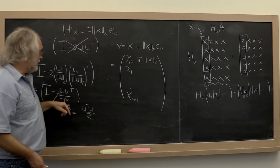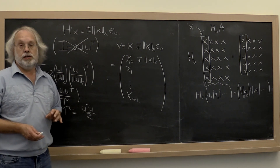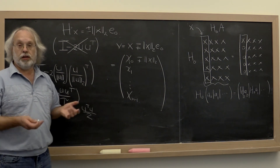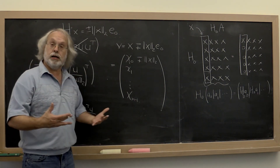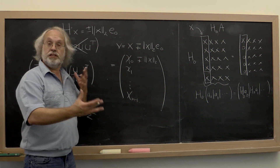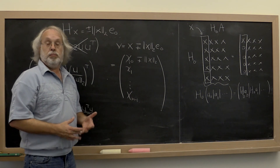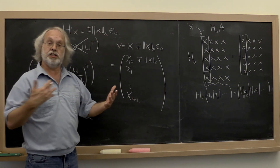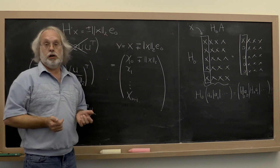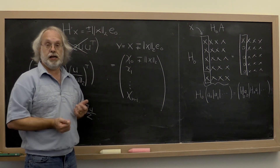We're now going to see how all of these details allow us to compute the QR factorization via a sequence of Householder transformations applied to the matrix A.